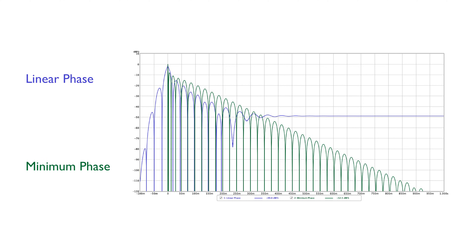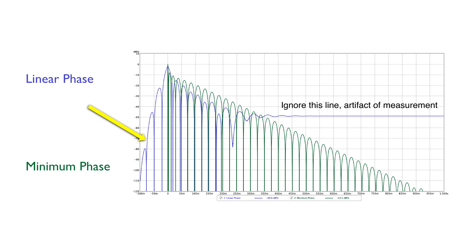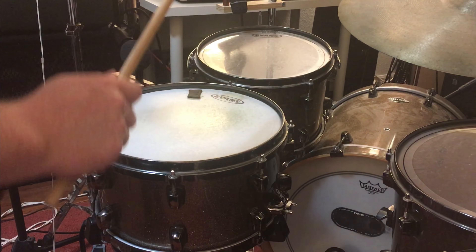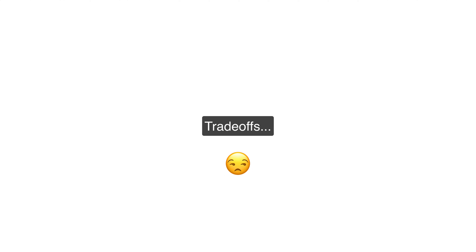There is another trade-off: step response. This is how the filter responds when the input goes from all zeros to all ones. The minimum phase filter starts doing stuff at exactly 0 milliseconds, as you might expect, and then fades off into infinity. The linear phase filter, however, starts before the signal comes in — that's called pre-echo. At about 50 milliseconds, we have a signal that's 40 decibels down. In real life, you would hear this as a ba-dump or ka-chink — some sort of sound like a flam on a drum. Nothing is free, and the world sucks.